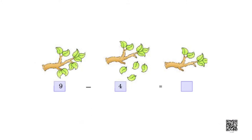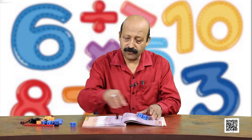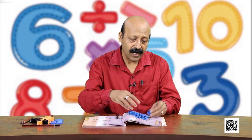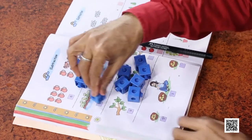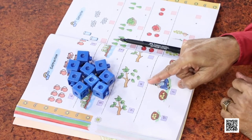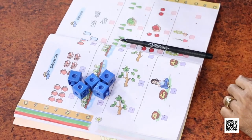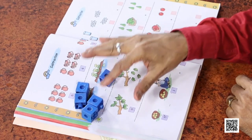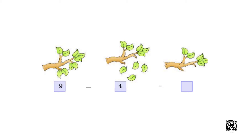Now try to find out what is 9 minus 4. A picture is given — you have to tell me. If you have a problem, you can use objects. Let us try: 9 objects — 1, 2, 3, 4, 5, 6, 7, 8, 9 — and 4 has been taken away. How many are left? Count: 1, 2, 3, 4, and 5. So we can write: 9 minus 4 is equal to 5.